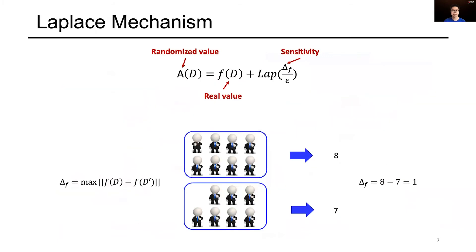The most commonly used mechanism to achieve DP is the Laplace mechanism. The main idea is adding Laplace noise to the real value. The magnitude of noise is proportional to the sensitivity of the function f, which measures the maximum changes of adding or deleting one sample on the output.